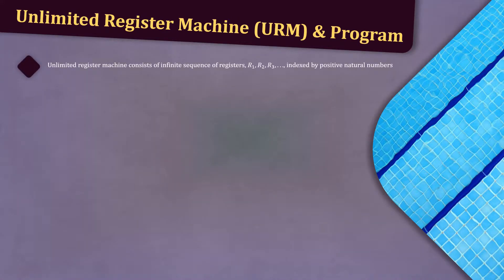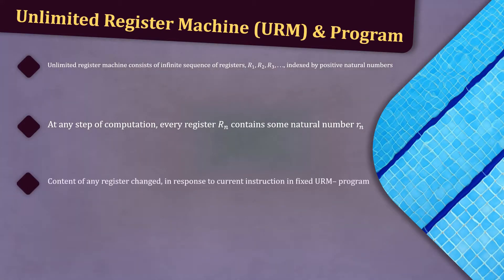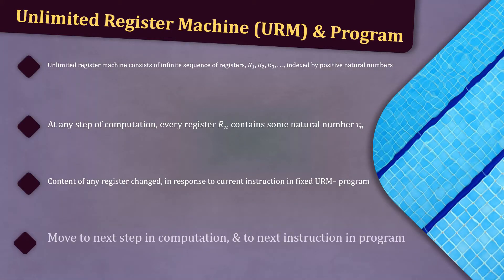An unlimited register machine consists of an infinite sequence of registers indexed by the positive natural numbers. At any step of a computation, every register rn contains some natural number, lowercase rn. The content of any register can be changed in response to the current instruction in a fixed URM program. Then we move to the next step in the computation and to the next instruction in the program.